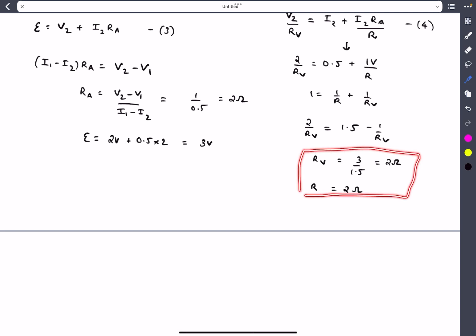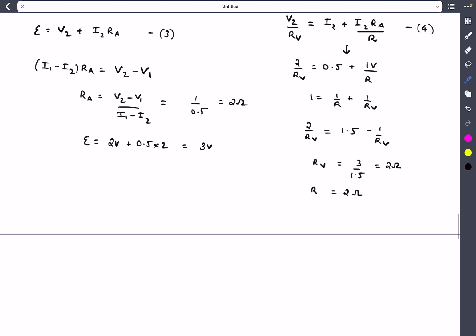After you substitute all the known values and solve these equations, you'll get both of them as 2Ω, which is the same as the value of the resistance of the ammeter. So all of them will have the same resistance of 2Ω.